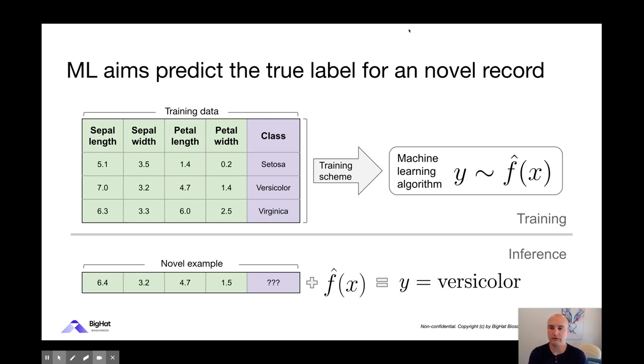That's ultimately the goal of the machine learning algorithm: to take novel examples, feed them through this algorithm and have it emit accurate predictions of the true label. So how do you do that? What you're doing is taking a subset of the data and sending it through some training scheme. We're trying to teach a machine learning algorithm to predict the y's from the x's. We're learning a model f hat of x that predicts the output label.